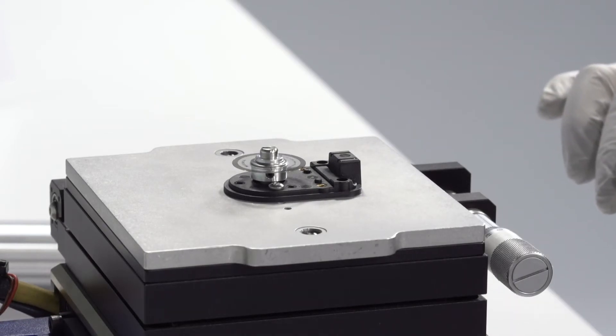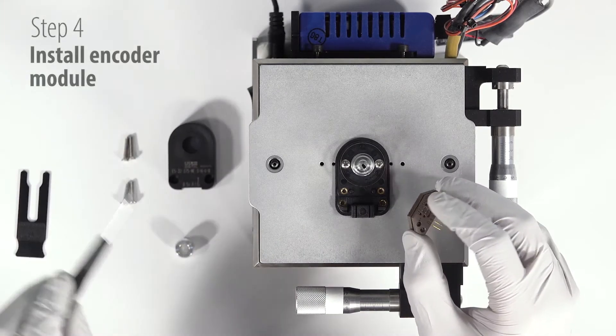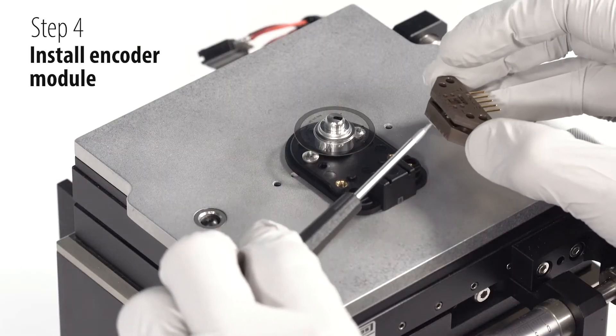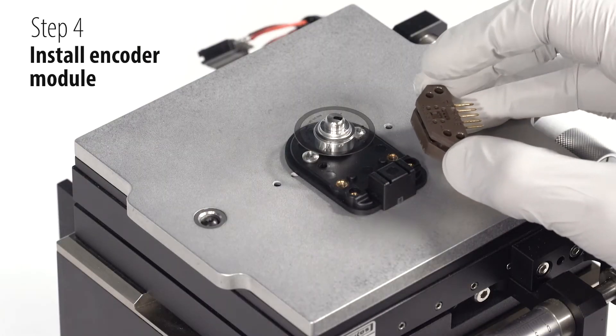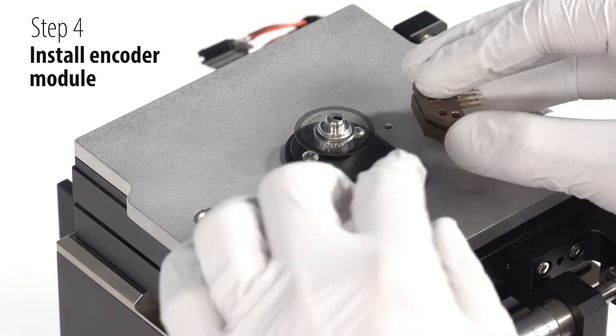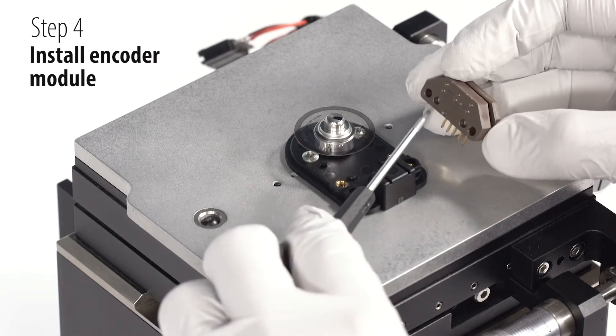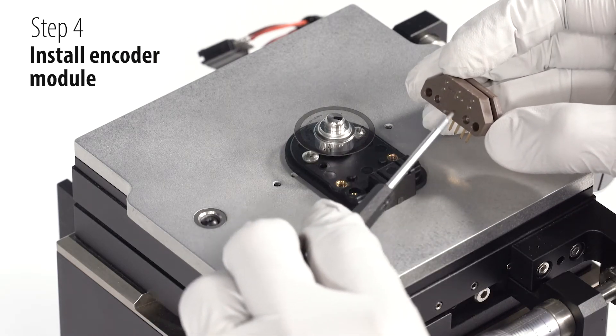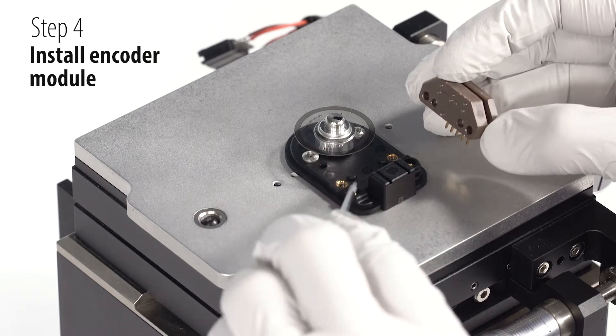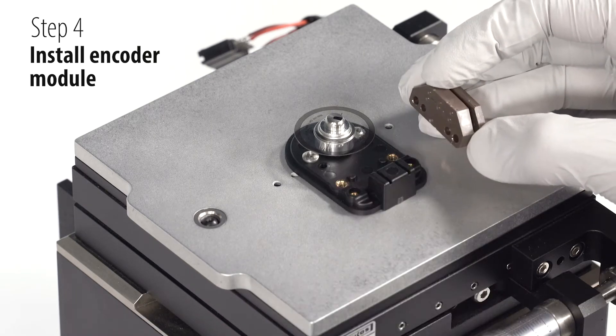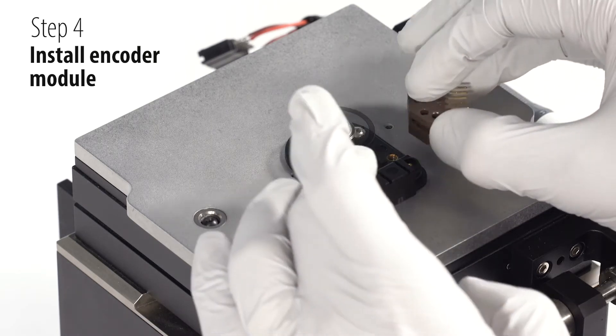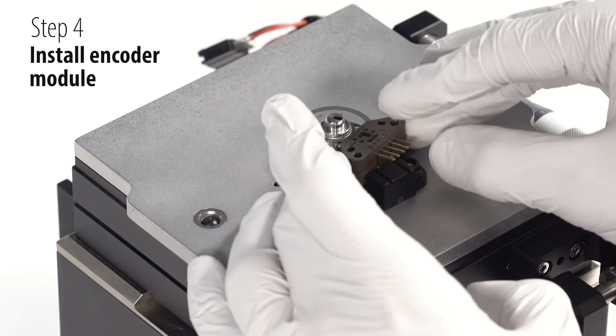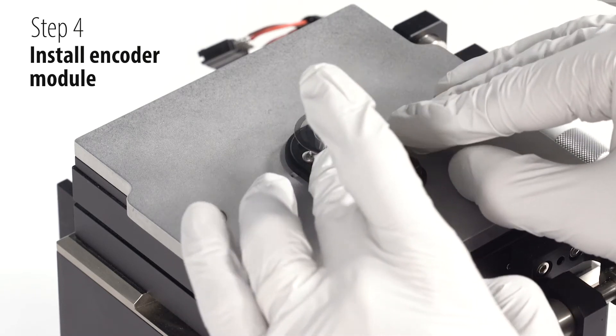For step four, we'll be installing the optical encoder module. The thin side of the module will be located above the hub disk assembly. And you'll notice these two holes on the bottom of the module, which will fit onto the two pins on the E5 base. You can slide the module on and snap it into place.